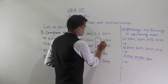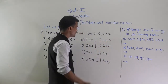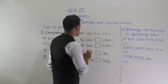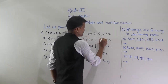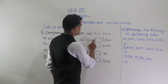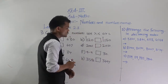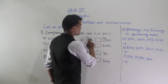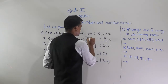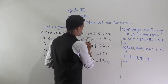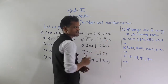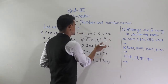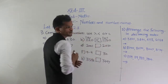Part B: compare 1120 and 1150. Both are 4-digit numbers. The thousands place digit is the same (1 in both). The hundreds place digit is also the same. So compare the tens place digit — here 2 and here 5. Since 5 is greater than 2, 1150 is greater than 1120.